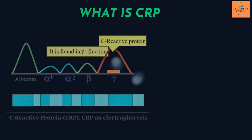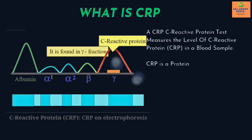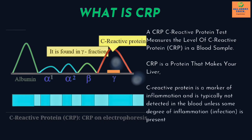What is CRP? A C-reactive protein test measures the level of C-reactive protein in a blood sample. CRP is a protein that your liver makes. C-reactive protein is a marker of inflammation and is typically not detected in the blood unless some degree of inflammation or infection is present in the body.